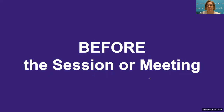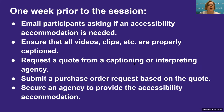Before the session or meeting begins, you should do the following. About one week prior to the session, email all participants asking if an accessibility accommodation is needed. Ensure that all videos, clips, etc. are properly captioned. Request a quote from a captioning or interpreting agency. Submit a purchase order request based on the quote. Secure an agency to provide the accessibility accommodation.